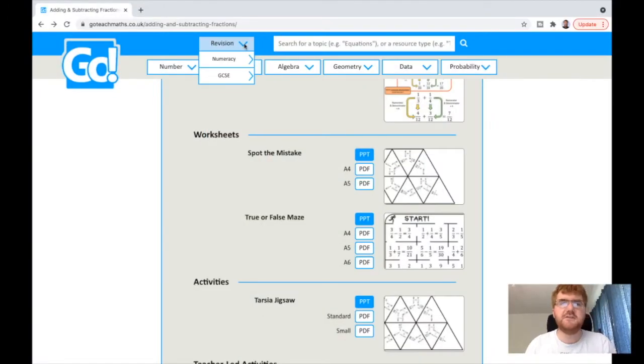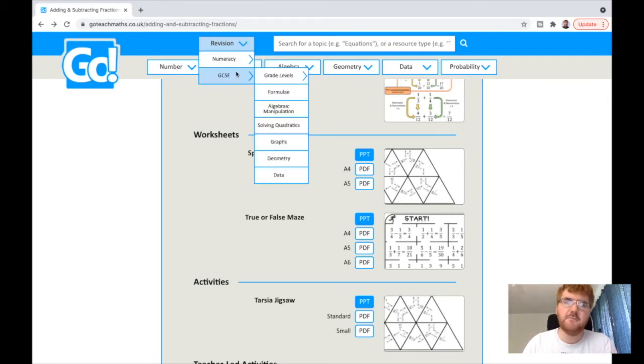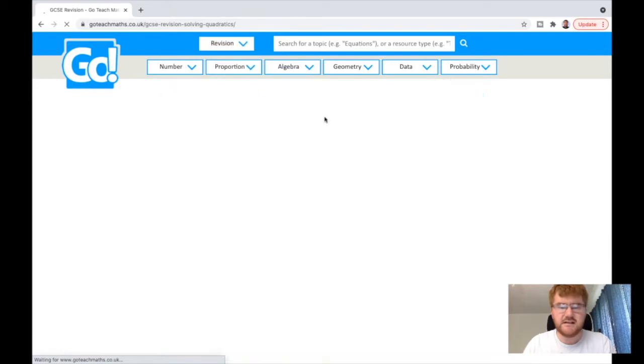Let's look at the revision materials at the top. One thing I've noticed is they go up just to GCSE. If you do IGCSE, IB, or A levels, unfortunately there are no resources there for you. But say I'm doing GCSE and I struggle with solving quadratics, which is a common topic. Let's click on that.